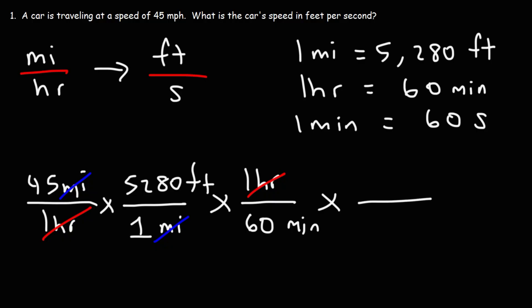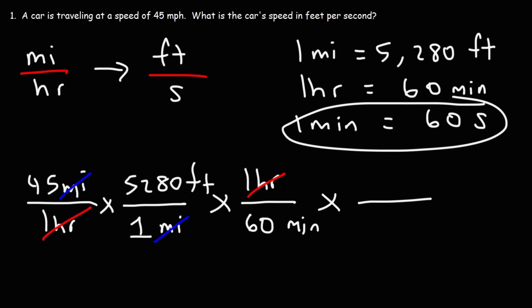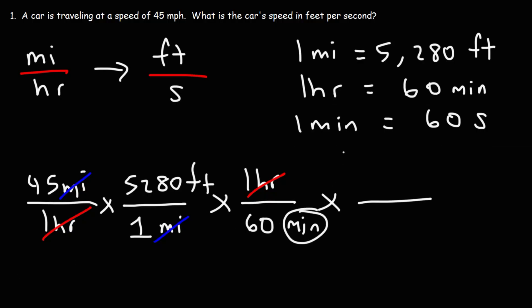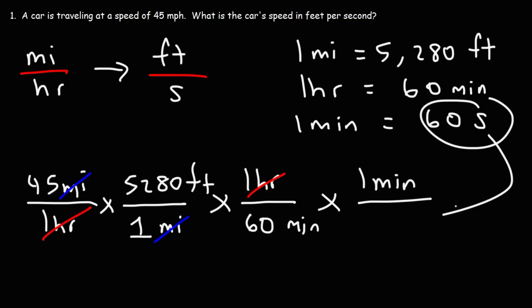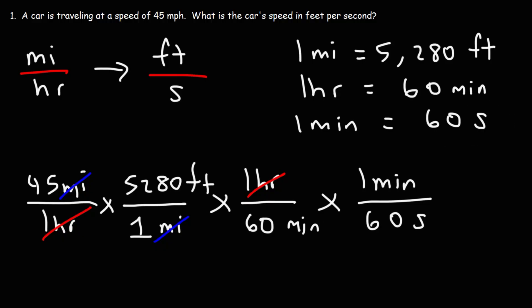Now let's convert minutes to seconds using our last conversion factor. We have the unit minutes on the bottom, so we're going to put the unit minutes on top of the next fraction, and the 60 seconds will go on the bottom. Now we can cancel the unit minutes. Notice what we're left over with: feet on top and seconds on the bottom, giving us the unit feet per second.